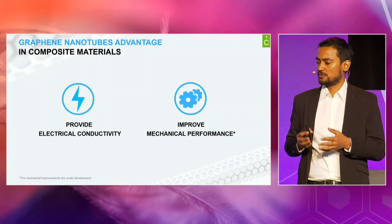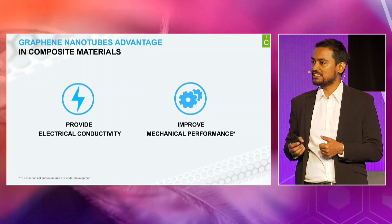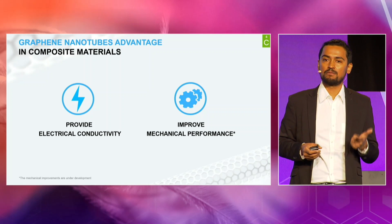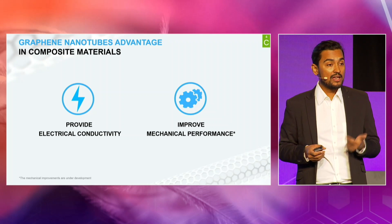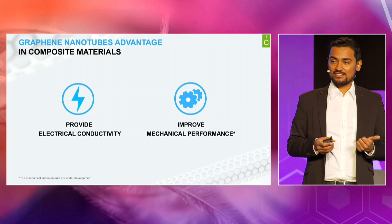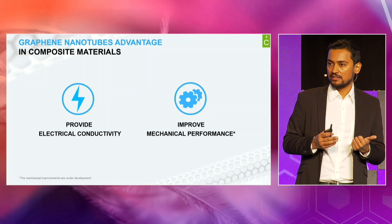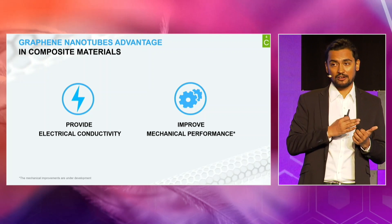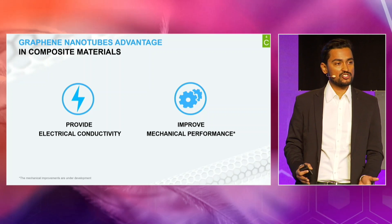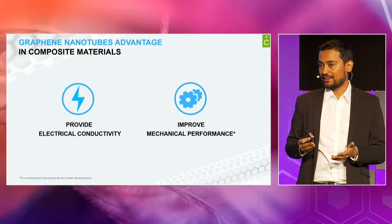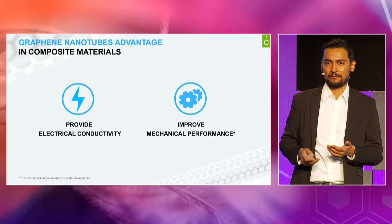So if you take all these properties, you get an additive which you can put in a very, very small quantity — almost in parts per million sometimes — and get these properties inside the polymer matrix. Primarily, graphene nanotubes are used to provide electrical conductivity and improve the mechanical performance of any polymer they go in. They are pretty stable chemically, so almost 75% of the polymers known to man can benefit from graphene nanotubes — you just mix them in.